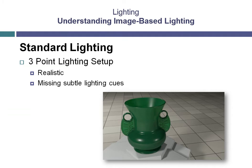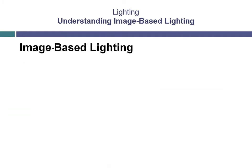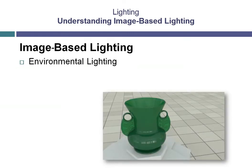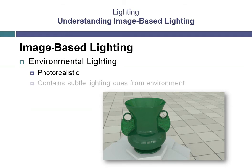Now let's look at image-based lighting. You can think of this type of lighting as environmental lighting, since you are lighting the scene using an existing environment. The result of this type of lighting is a much more photorealistic rendering. And because you are using an image of an environment, the rendering will pick up the subtle lighting cues.